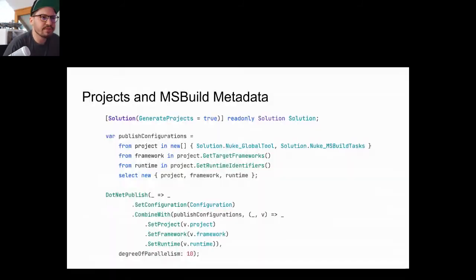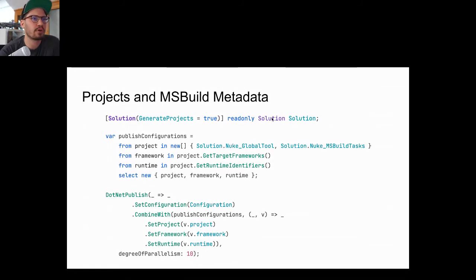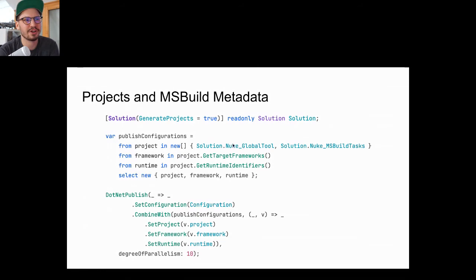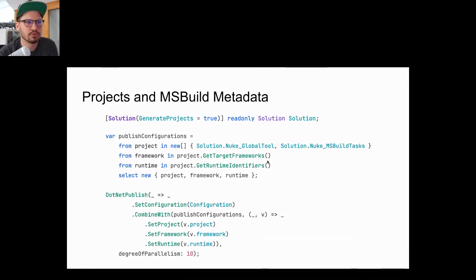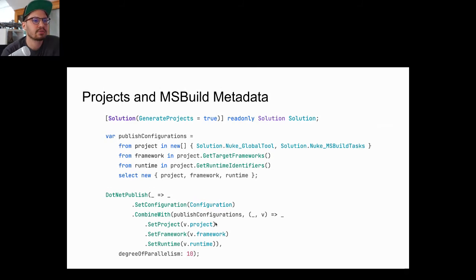The solution model is a recent addition using source generator magic. If you add 'GenerateProjects = true' to the Solution attribute, you get typed access to your build projects. Through those projects you can get target frameworks and runtime identifiers, then create publish configurations by combining them, and call dotnet publish for all those different combinations using CombineWith.